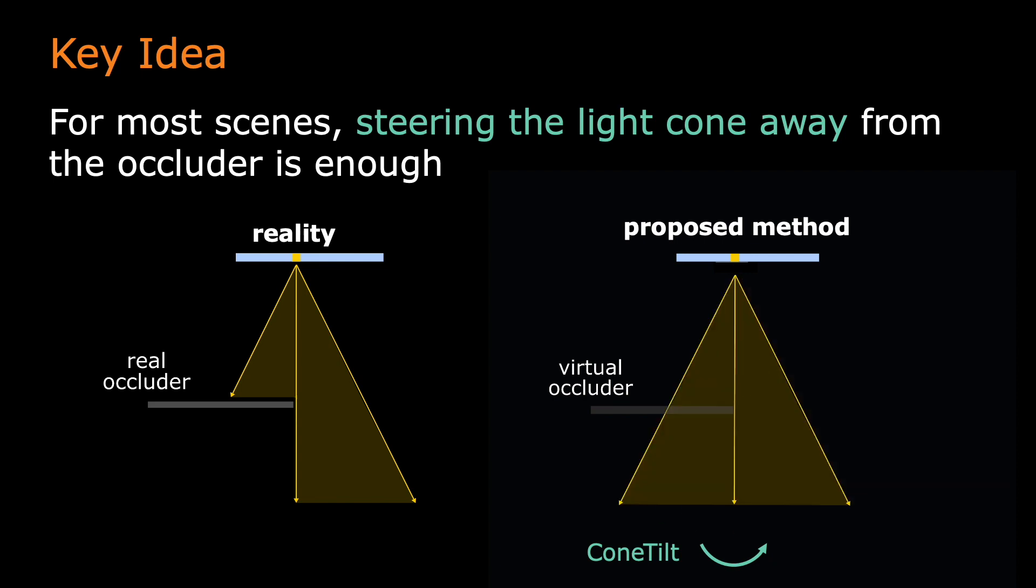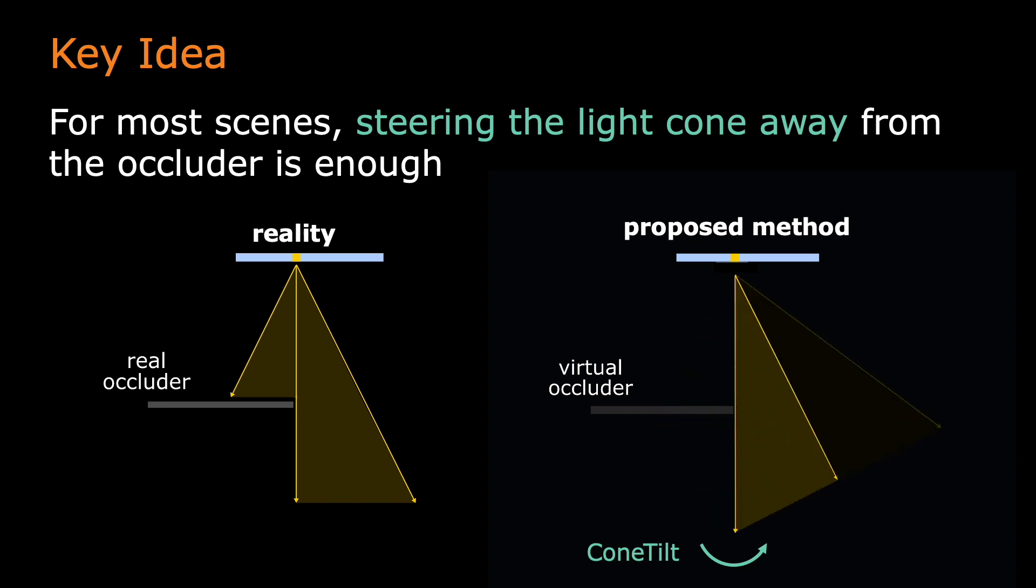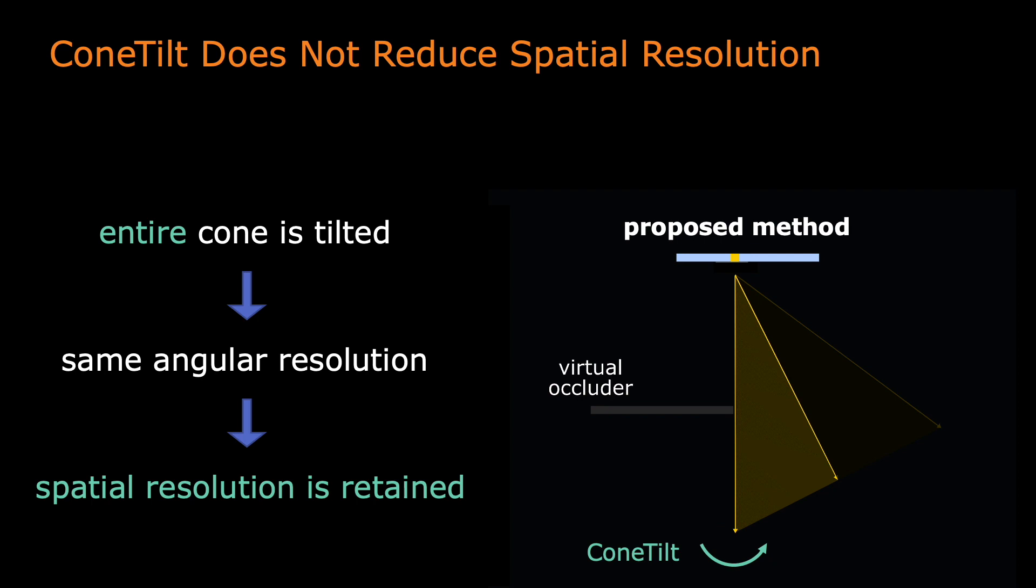Since we are tilting the entire light cone, we call the method ConeTilt. More importantly, since we tilt the entire cone, we do not need additional angular resolution. Therefore, we retain the spatial resolution.